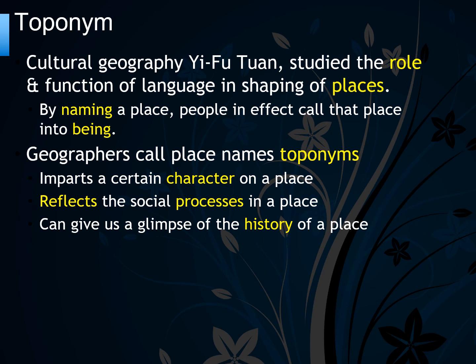Toponyms are place names. By naming a place, people in effect call that place into being. Geographers call these toponyms — a name imparts a certain character on a place, reflects the social process of a place, and can give us a glimpse of a place's history. Place names are very important.